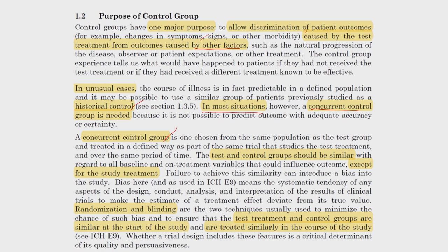The concurrent control group is chosen from the same population as the test group, so the test group and control group are from the same population and therefore can be similar to each other. Whether the test drug or control drug is administered is the key difference, but otherwise they are similar. To achieve this we need randomization and blinding. The test group and control group should be very similar at the start of the study — that requires randomization — and during the study they must be treated and observed similarly, which is why we need blinding.